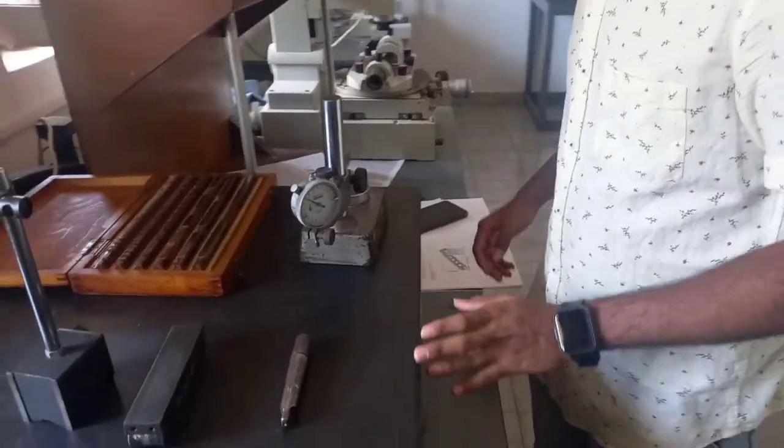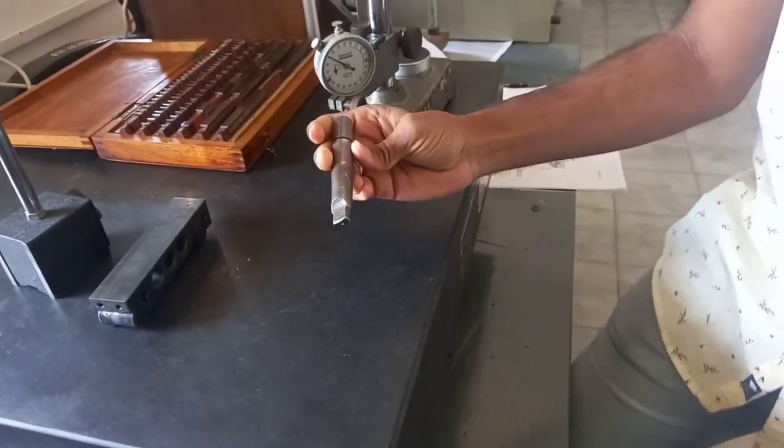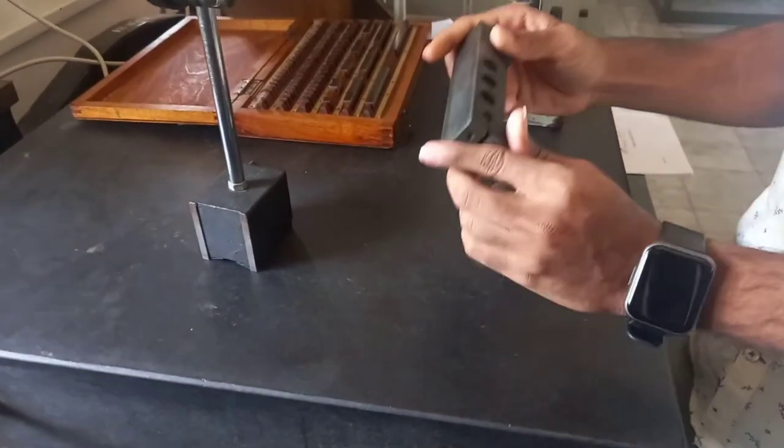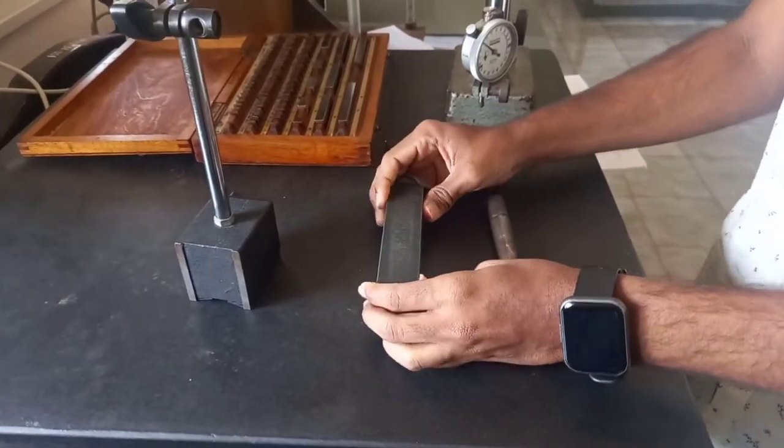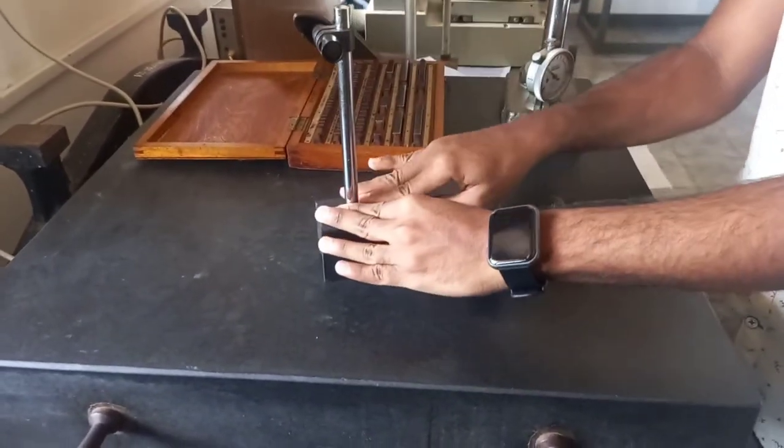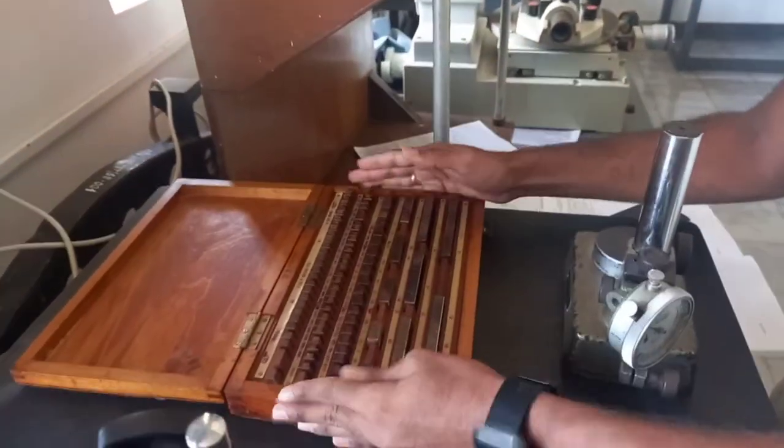The required equipment are a dial gauge and we have a taper cylinder as our specimen. This is a sine bar of length 100 mm, also available in different lengths, made up of high carbon steel. And this is a magnetic stand for the stiffness.